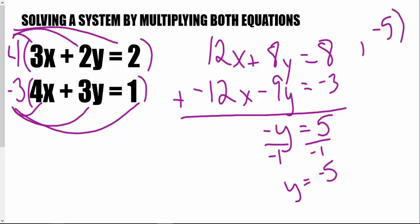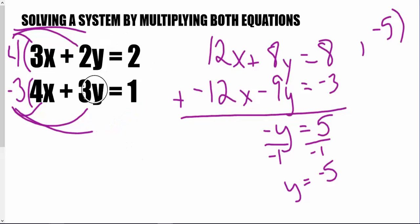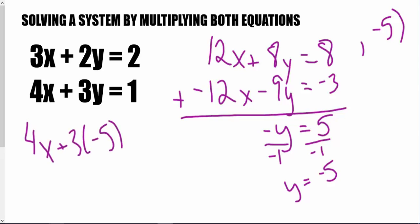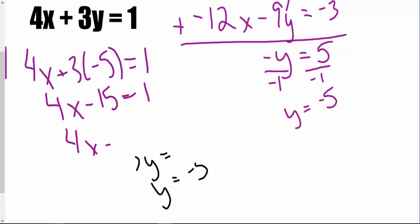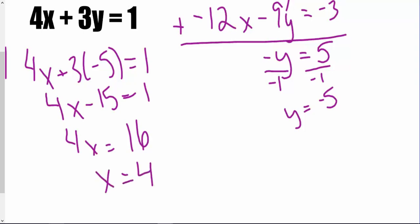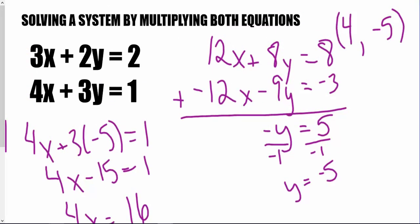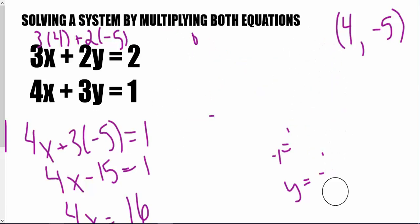So I have negative 5 for my y value. From here I'll plug that into the bottom equation: 4x plus 3 times negative 5 equals 1, or 4x minus 15 equals 1, which means 4x equals 16. Dividing by 4 gives me x equals 4. Plugging into the top equation: 3 times 4 plus 2 times negative 5 equals 12 minus 10, which is 2. So we're good. Our solution is 4 comma negative 5.